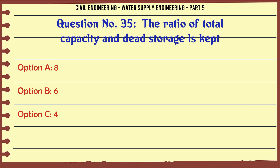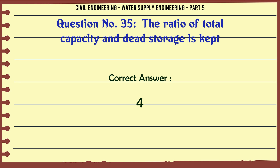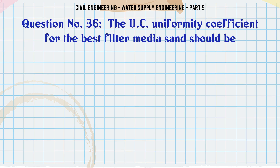The ratio of total capacity to dead storage is kept at: A. 8, B. 6, C. 4, D. 3. The correct answer is 4.